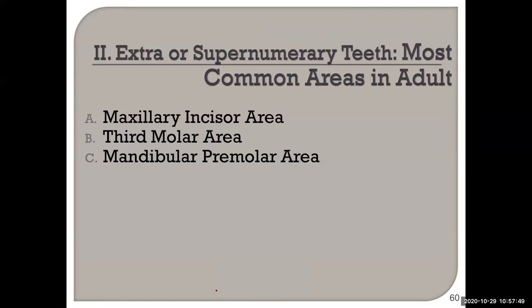For extra teeth: if it's between tooth numbers eight and nine, it's called a mesiodens. In the third molar area, it could be a supernumerary or a paramolar if it's more on the buccal or lingual.